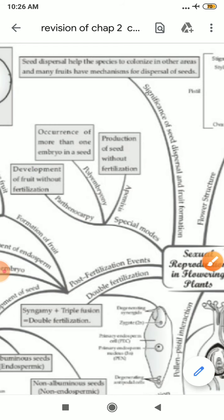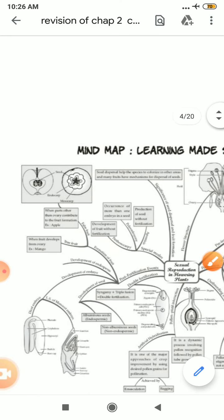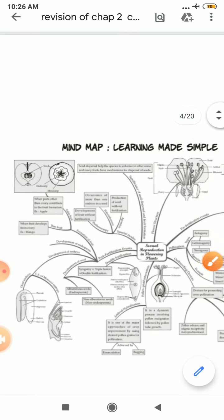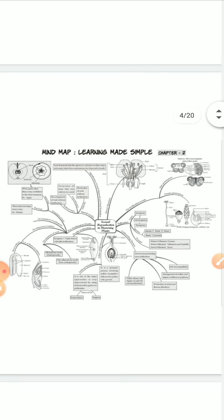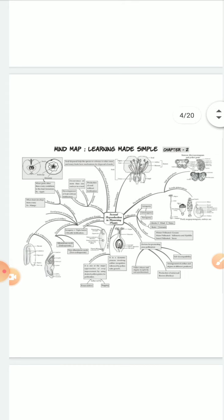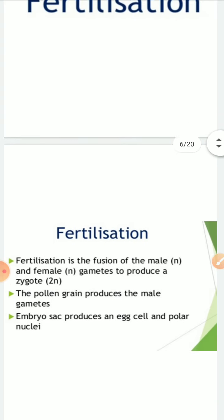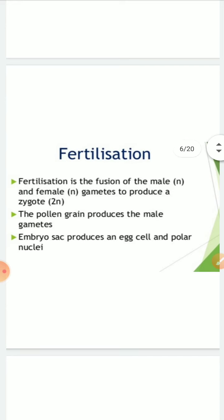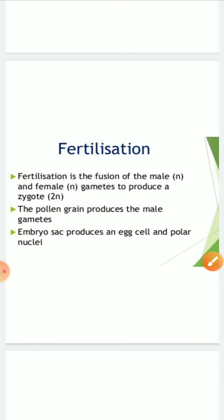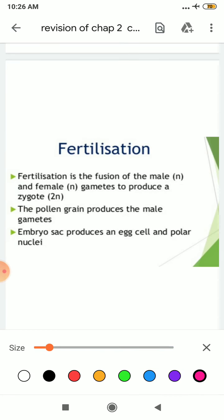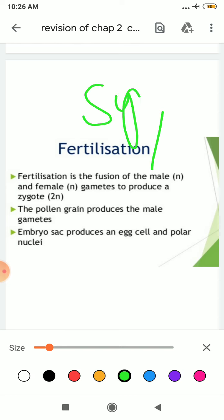So here I have given you the mind map of sexual reproduction in flowering plants. I hope you have understood. Now I will take your important topic, that is fertilization or double fertilization. But first we need to know something about fertilization. In case of your plant, for fertilization we use a different term, that is syngamy.